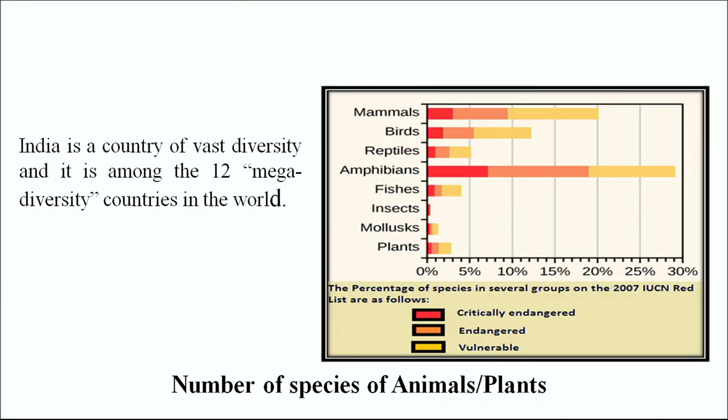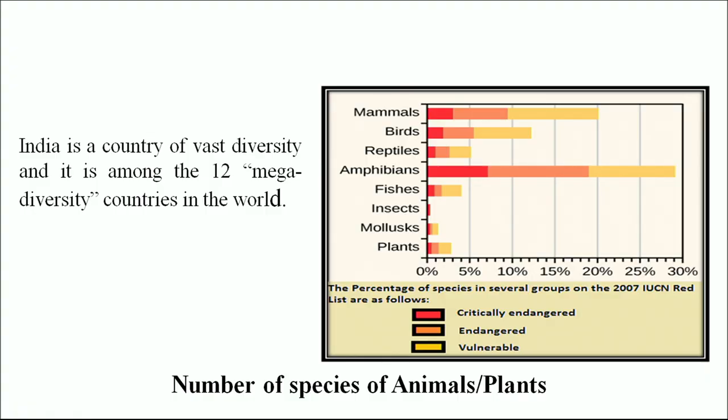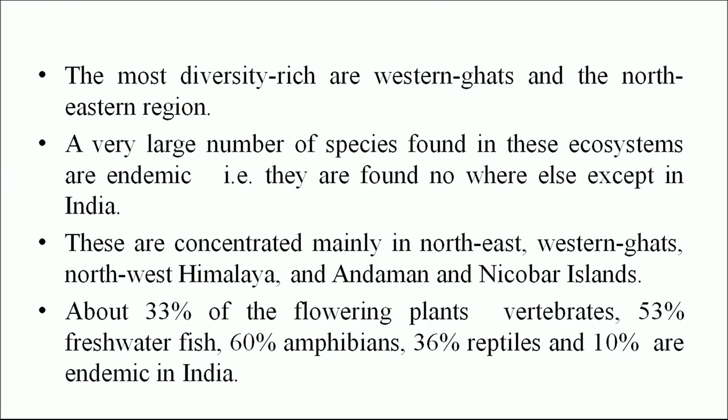A bar diagram shows the number of species of animals and plants. India is a country of vast diversity and is among the 12 mega diversity countries in the world. It has very diverse terrestrial and aquatic ecosystems ranging from ice-capped Himalayas to deserts, from arid shrub to grassland to wetlands and tropical rainforests, from coral reefs to the deep sea. Each of these comprises a great variety of habitats and interactions between biotic and abiotic components. The most diversity-rich areas are the Western Ghats and the northeastern region.